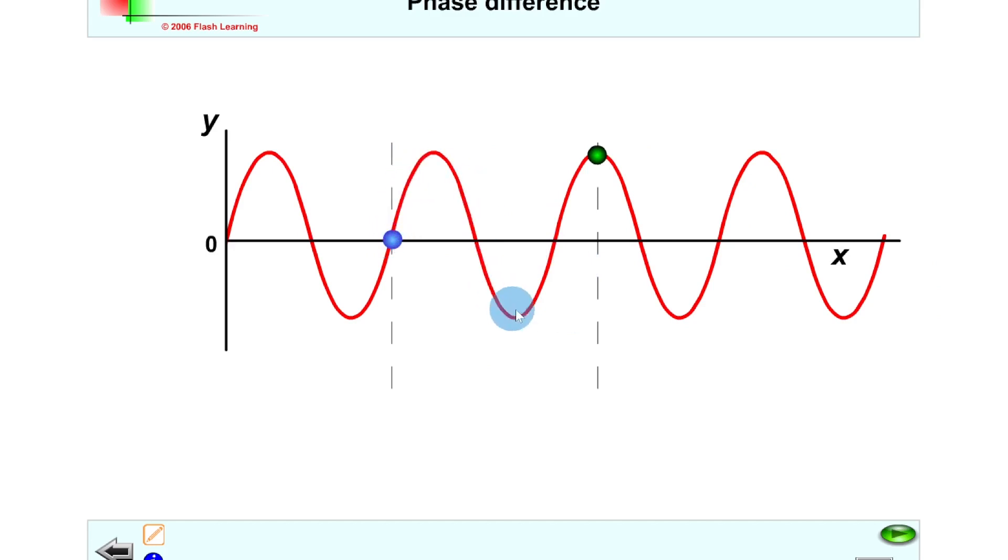If we go one full wavelength along we get to this point here and then we've got another quarter wave. So we could say the phase difference is one and a quarter wavelength which is the same as 1.25 lambda. That would be the same as 2 pi plus pi over 2 radians.